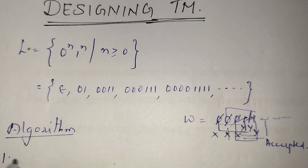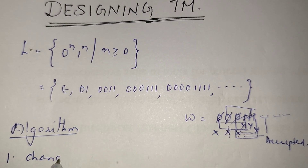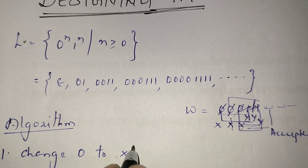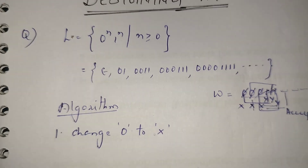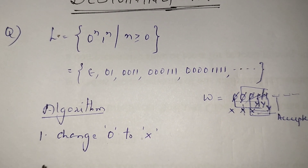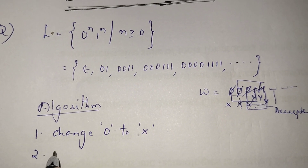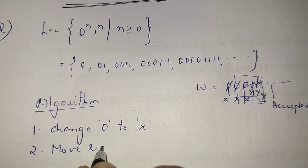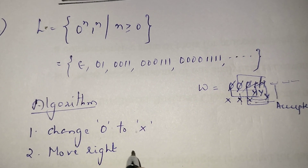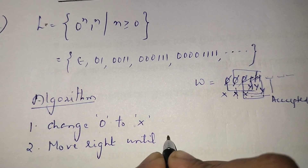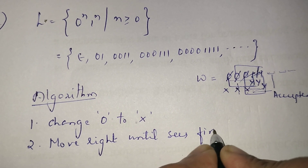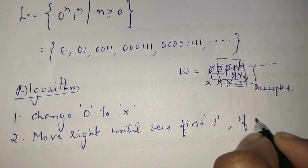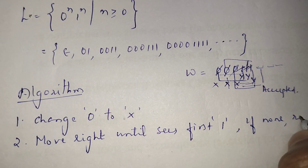So what do we need to do? What is the first step? Whenever I see a 0, I need to replace it with x. Then I need to move towards right — move right until I find the first 1. If there is no 1, the string is rejected.